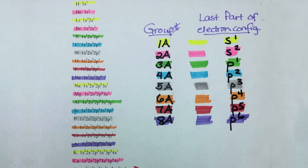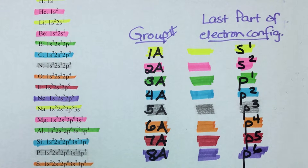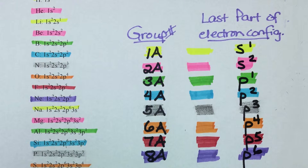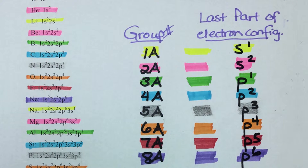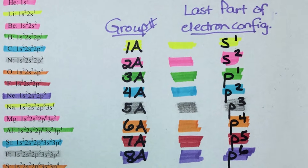Finally, we ended the unit by asking our students to execute a performance task, identifying periodic and quasi-periodic trends among elements based on their atomic structure. We examined atomic radius, effective nuclear charge, electronegativity, and ionization energy.